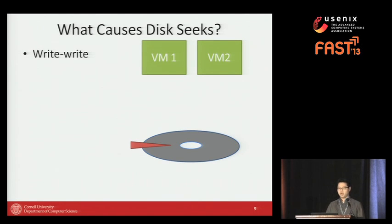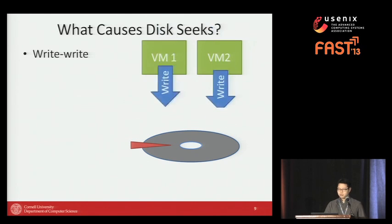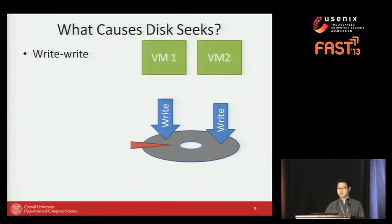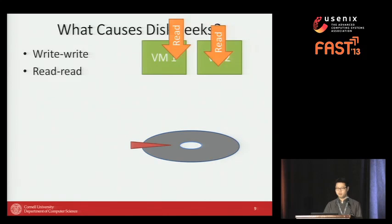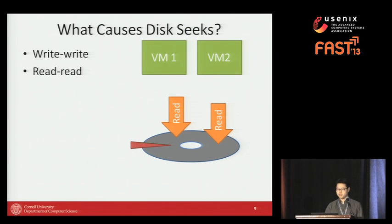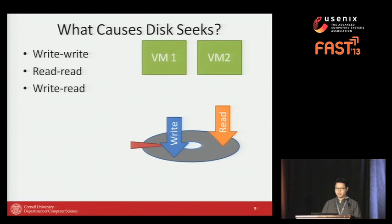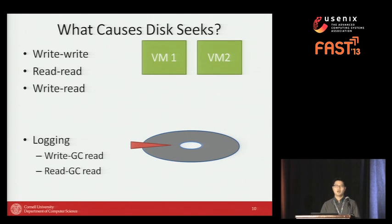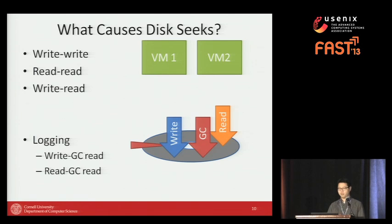Before jumping into the design, I want to enumerate what causes I/O contention and disk seeks. I/O contention occurs when multiple VMs try to access a shared disk. If two VMs write to different disk locations, causing the disk head to seek, we call this write-write contention. Similarly, different instances reading different locations is read-read contention, and write versus read is write-read contention. A log-structured file system effectively solves write-write contention but introduces garbage collection versus write and garbage collection versus read contention.